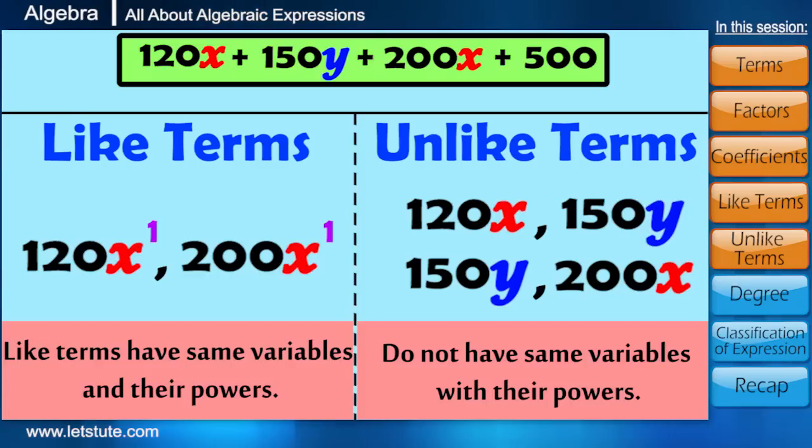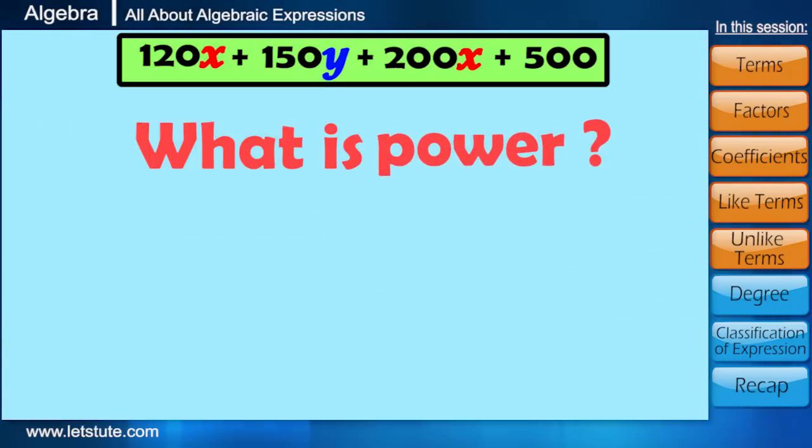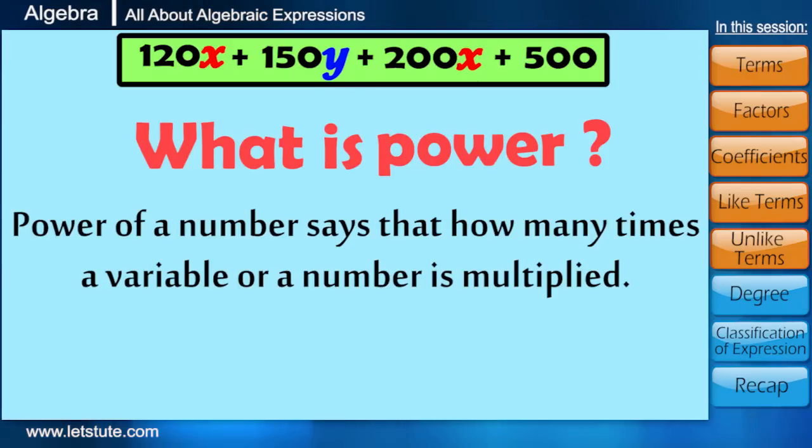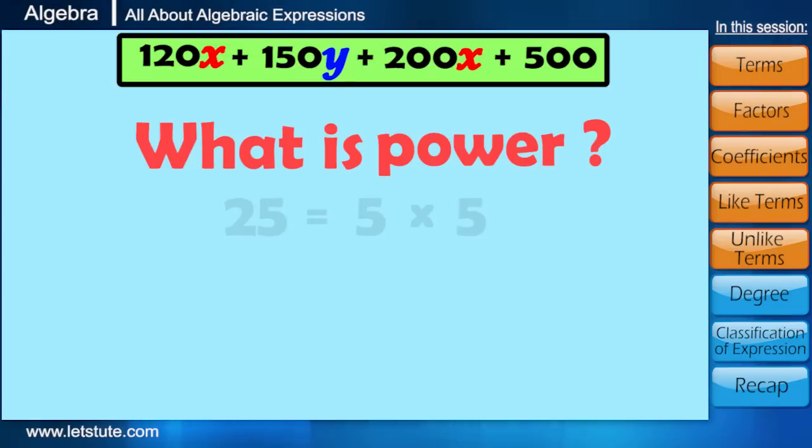So as I have said something about power in the definition of like terms, can you tell what is power? Power of a number sees that how many times a variable or a number is multiplied. Just say for example, 25 is obtained by multiplying 5 twice. So here 2 is the power of 5.